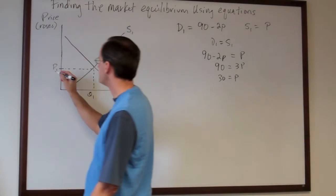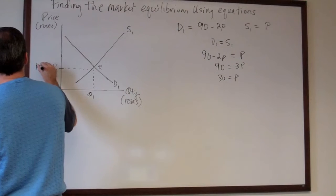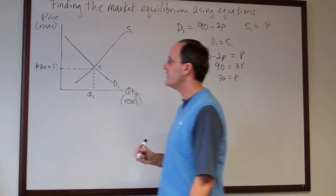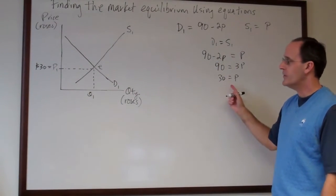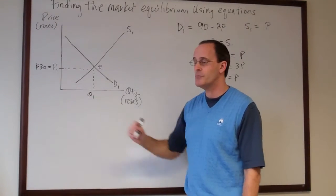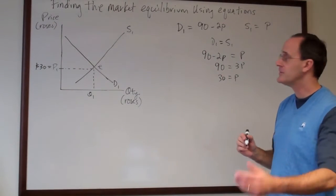So I'm going to go ahead and put that over here. Here's thirty dollars and at a price of thirty dollars for say a dozen roses what we want to know is how many roses the average person would buy which is of course solving for Q.